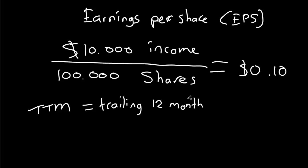So when you have trailing 12 months earnings per share, it means that they take the last four quarters of income and divide that by the number of shares.